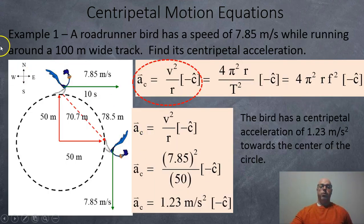So here's an example using one of the formulas. Here we've got a roadrunner traveling east at 7.85 meters per second. And then 10 seconds later, it's going to be traveling south at 7.85 meters per second. So it's moving in a circular path here. So what is the acceleration of the bird at any given time? We can find out using our original formula. So the speed is 7.85 squared. The radius is 50 meters because the width of the track was 100. So the radius is 50. And when we put it in the calculator, we get 1.23 meters per second squared towards the center of the circle.